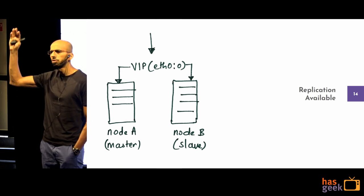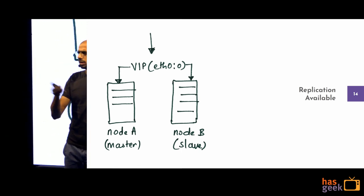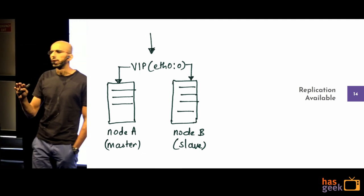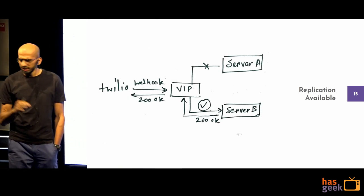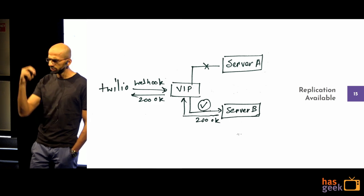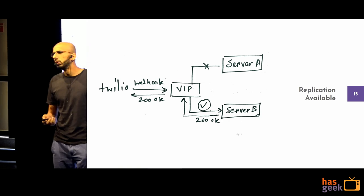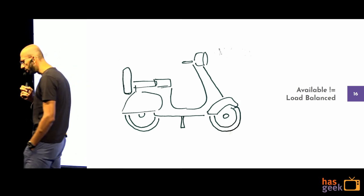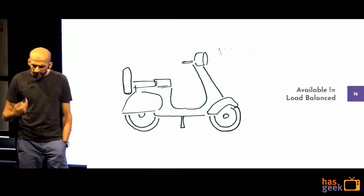With VIP, we've solved the problem of availability — if one server goes down, the other is available. But this is not the answer to the load problem. Load balancing is different from availability. A spare wheel doesn't balance the load — load balancing is a separate concern entirely.